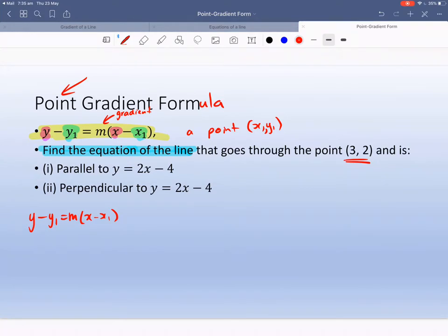In this first part, it says what is parallel to 2X minus 4. Well, if it's parallel, it must have the same gradient. So let's start answering that. I'm going to put a line here because we will probably go through it.